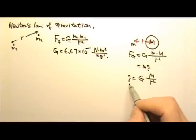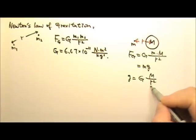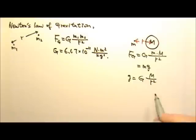Which means that the gravitational acceleration at a location is proportional to the mass of the planet and inversely proportional to the distance squared. And remember, this is the distance to the center of the planet.